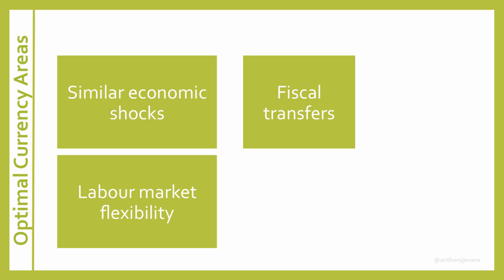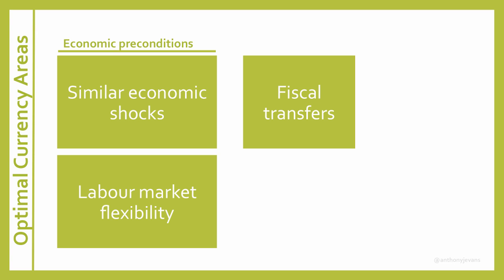However, historically, the US has formed an effective currency area despite having limited federal transfer payments. Rather than think of fiscal transfers as the third criteria, we can think of the first two — similar economic shocks and labour market flexibility — as being the economic preconditions, and fiscal transfers as one of a number of potential political backstops.